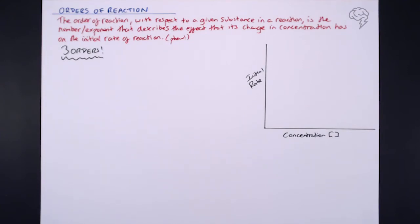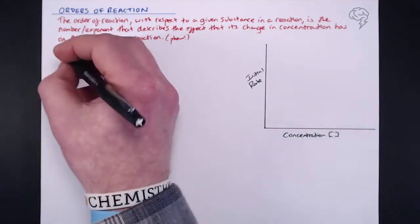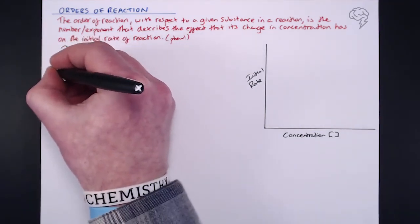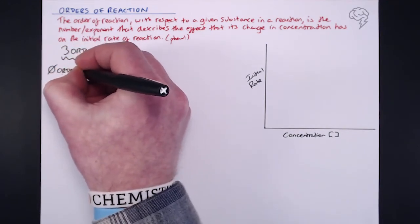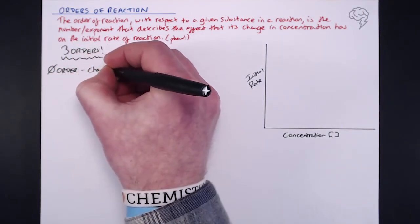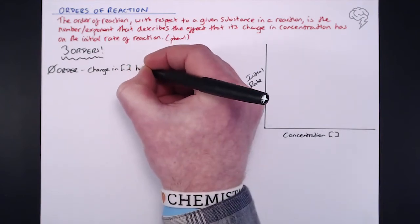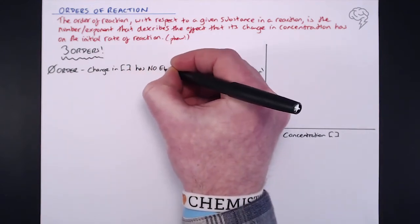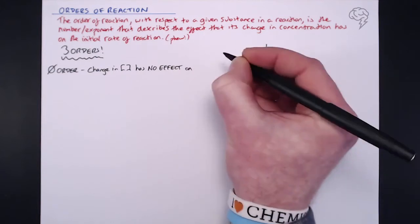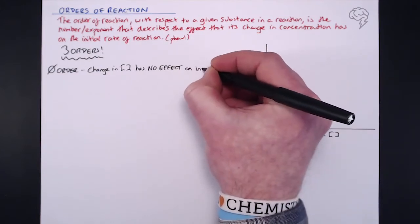So as we look at changing concentration, what's happening to the rate of the reaction? And just a quick pointer, I'm using square brackets to denote concentration here. So of our three orders, the first one is zero order.